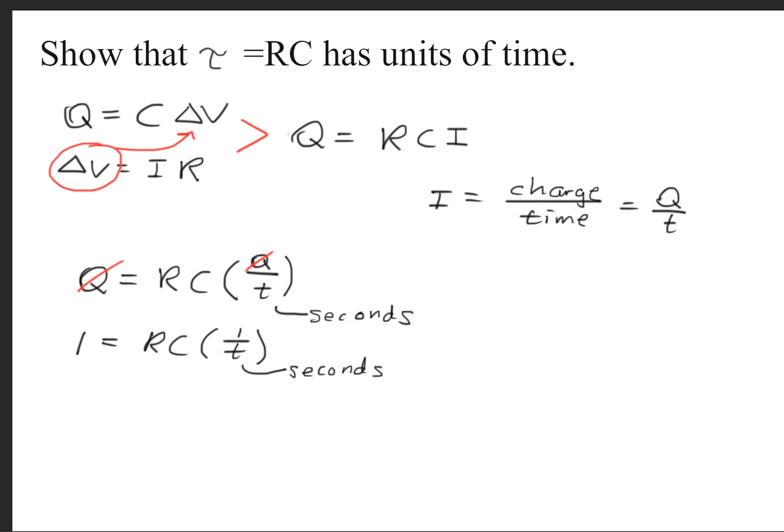Notice still that the units of time in seconds is still present. We'll isolate RC by dividing by 1 over t on both sides, and in the end we get that RC has units of time, thus proving what the question wanted us to verify.